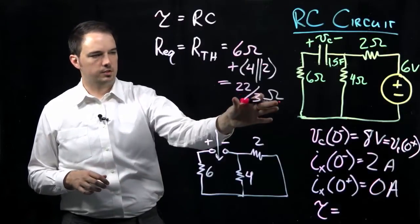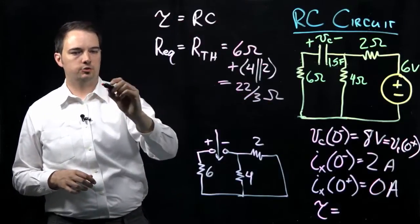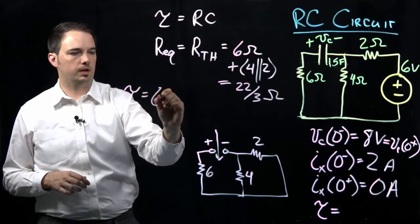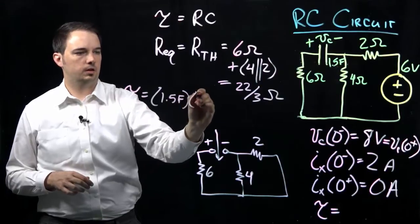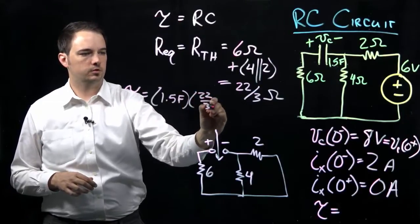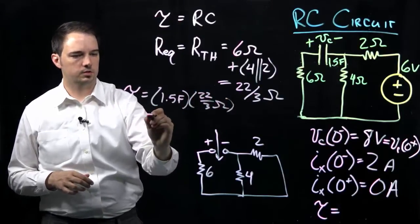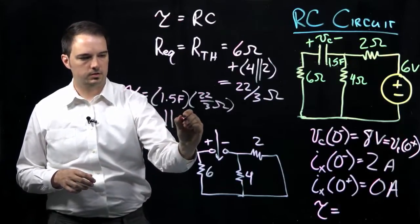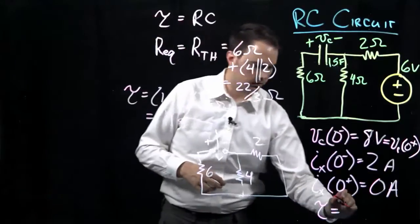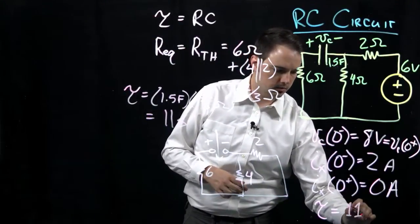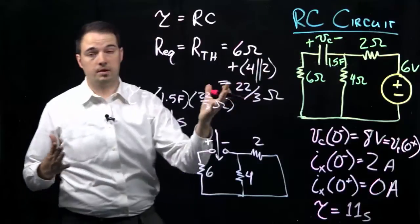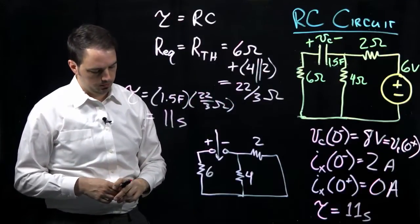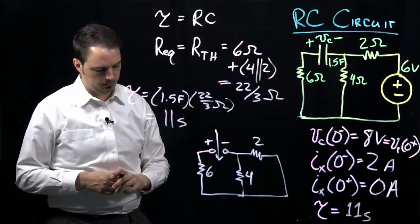Plugging back into the equation for tau: capacitance of 1.5 farads times 22/3 ohms for the Thevenin equivalent resistance gives a tau of 11 seconds — a pretty long time constant, which is not unexpected given that a 1.5 farad capacitor is quite large and will significantly slow down the circuit's response.